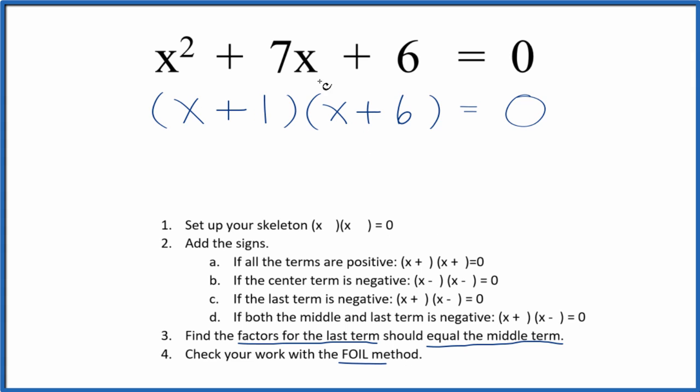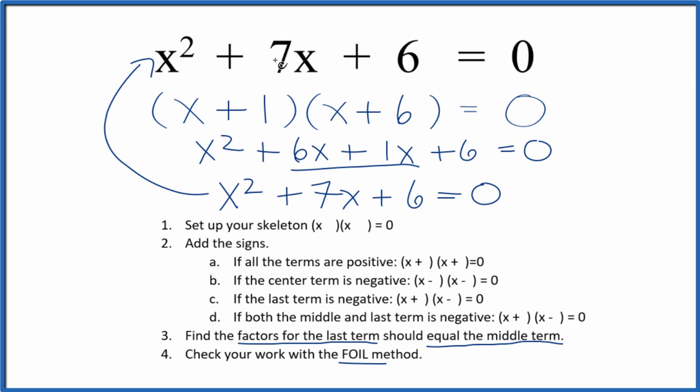When we do that, we'll multiply the first terms, the outside terms, inside, and then last. And we end up with, and we can combine these terms here. And this is the same as what we had when we started. So we know that we've done this correctly.